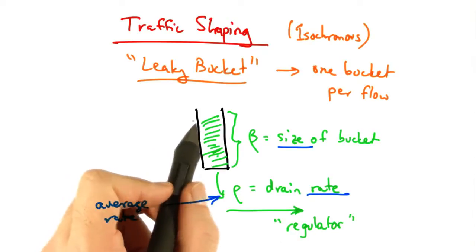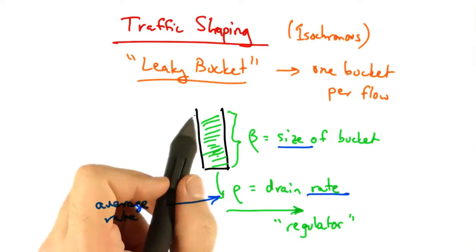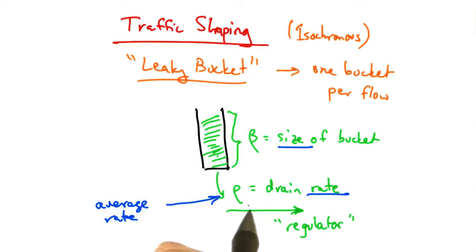Data can arrive faster or slower into the bucket, but it cannot drain at a rate faster than rho. Therefore, the maximum average rate that traffic can be sent is this smooth rate rho.